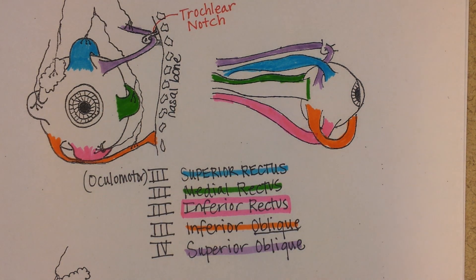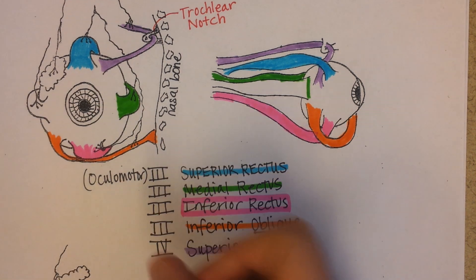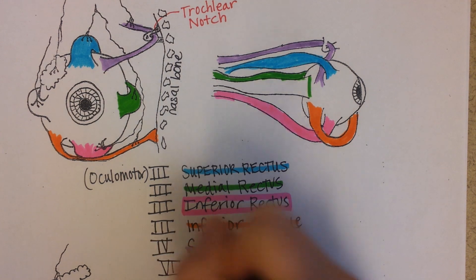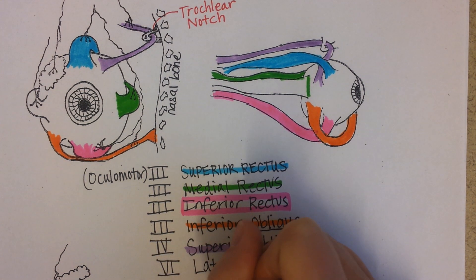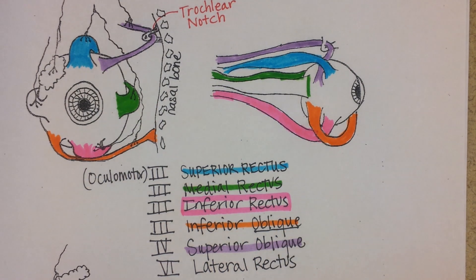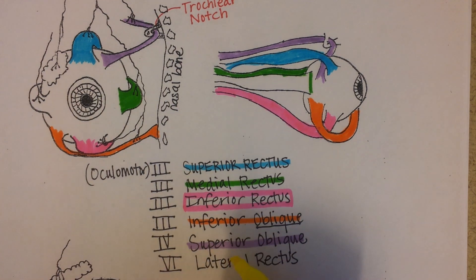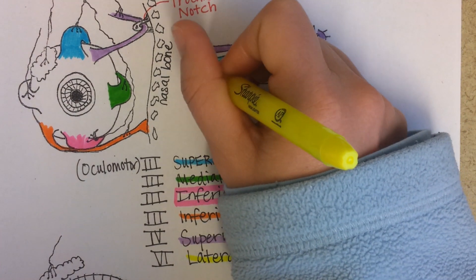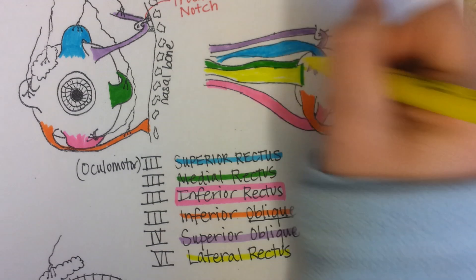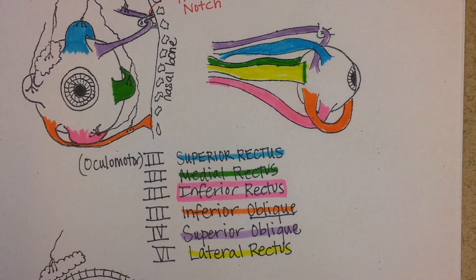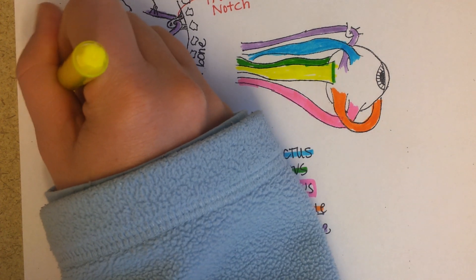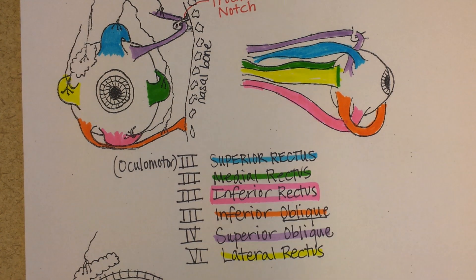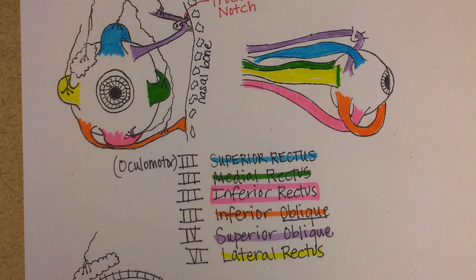Then there's another muscle that moves your eye so that you can look to the side, and that is the lateral rectus. That's controlled by cranial nerve number six. The lateral rectus, when it contracts, helps you look to the side. There's an inhibition of muscles from both activating at the same time, so whereas you can have both medial rectuses contracted and look cross-eyed, you can't contract both lateral rectuses and look to the outside.